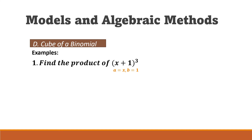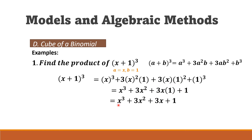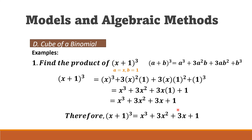Example two: find the product of (x + 1)³. The first term is x and the second term is 1. We get x³ plus 3 times x² times 1, plus 3 times x times 1², plus 1³. Simplifying: x³ + 3x² + 3x + 1.